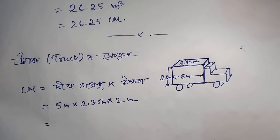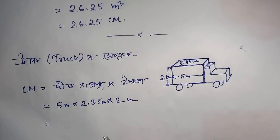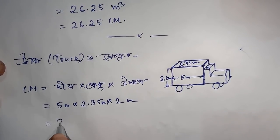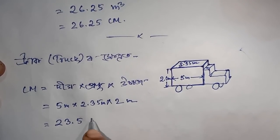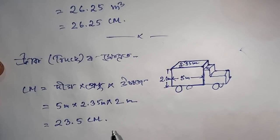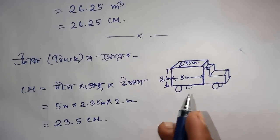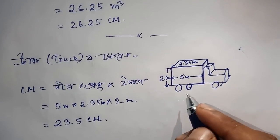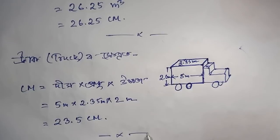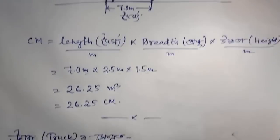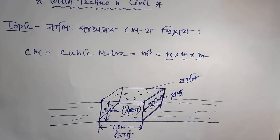So 5 × 2.35 × 2 is equal to 23.5 CM. This is the volume calculation for the truck. Thank you for watching my video. Please like, share, and comment.